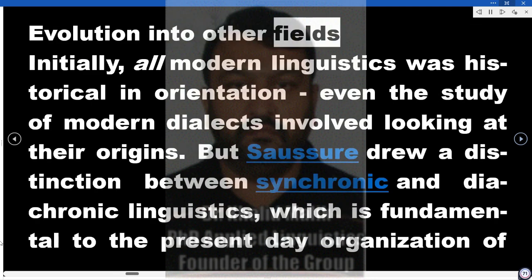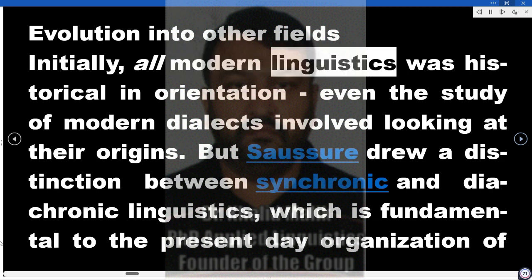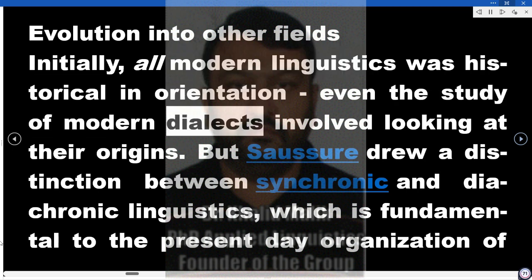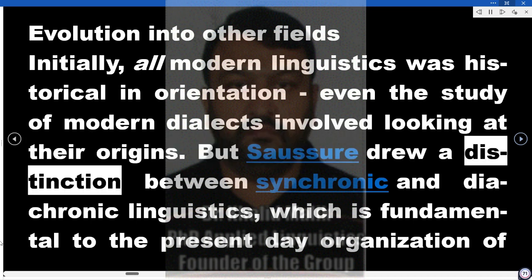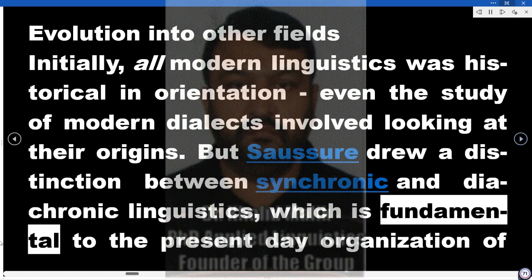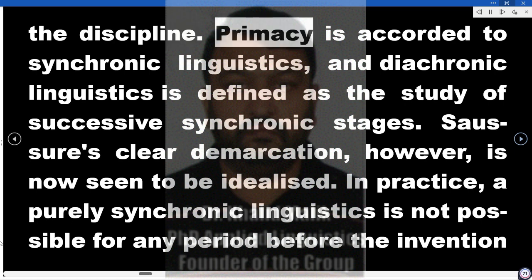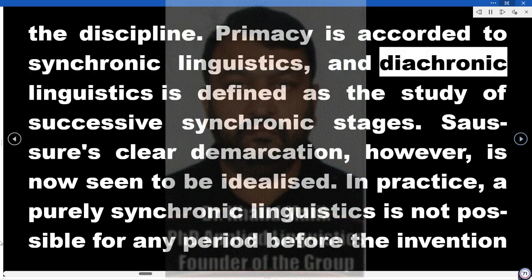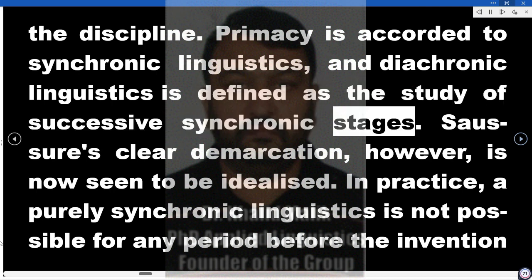Evolution into other fields. Initially, all modern linguistics was historical in orientation — even the study of modern dialects involved looking at their origins. But Saussure drew a distinction between synchronic and diachronic linguistics, which is fundamental to the present-day organization of the discipline. Primacy is accorded to synchronic linguistics, and diachronic linguistics is defined as the study of successive synchronic stages.